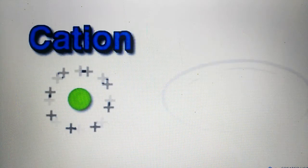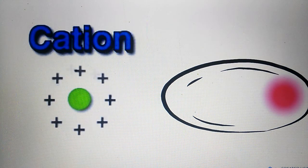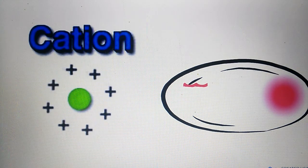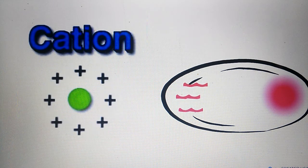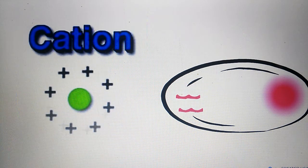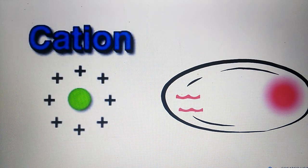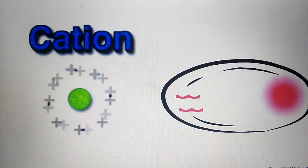When a cation is brought near to an anion, it withdraws electrons toward itself and repels its nucleus away from itself. The anion is said to be polarized.